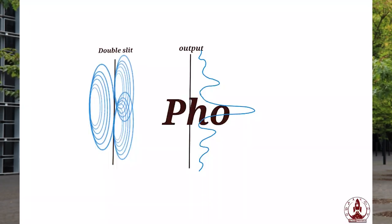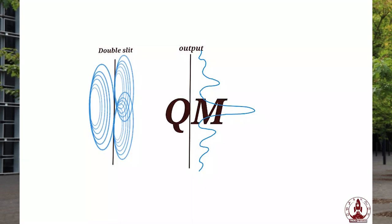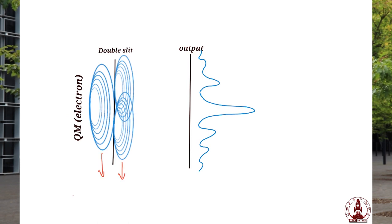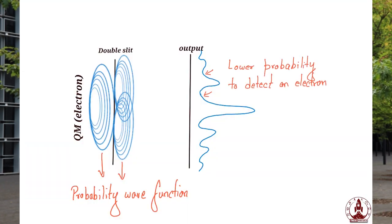Quantum mechanically the double slit experiment is slightly different, because a single photon or single electron interferes with itself — in essence traveling through both slits at once — yet shows the same wave-like interference properties. For photons you see bright fringes where constructive interference occurs and dark fringes where it doesn't. For electrons, the wave amplitude defines the probability of detecting the electron, so you have regions of very high probability where many electrons are detected and dark fringes where no electrons are detected at all.